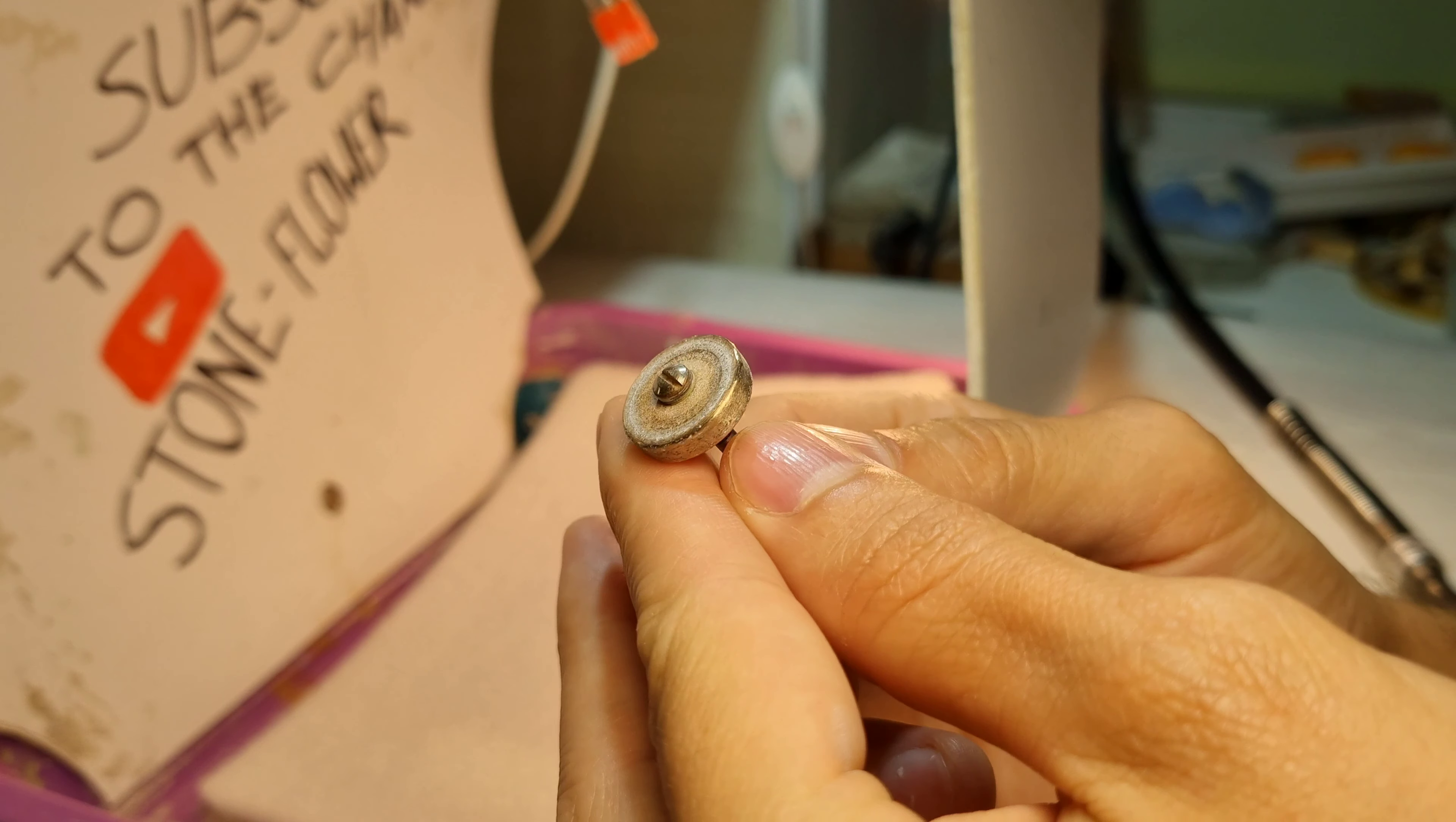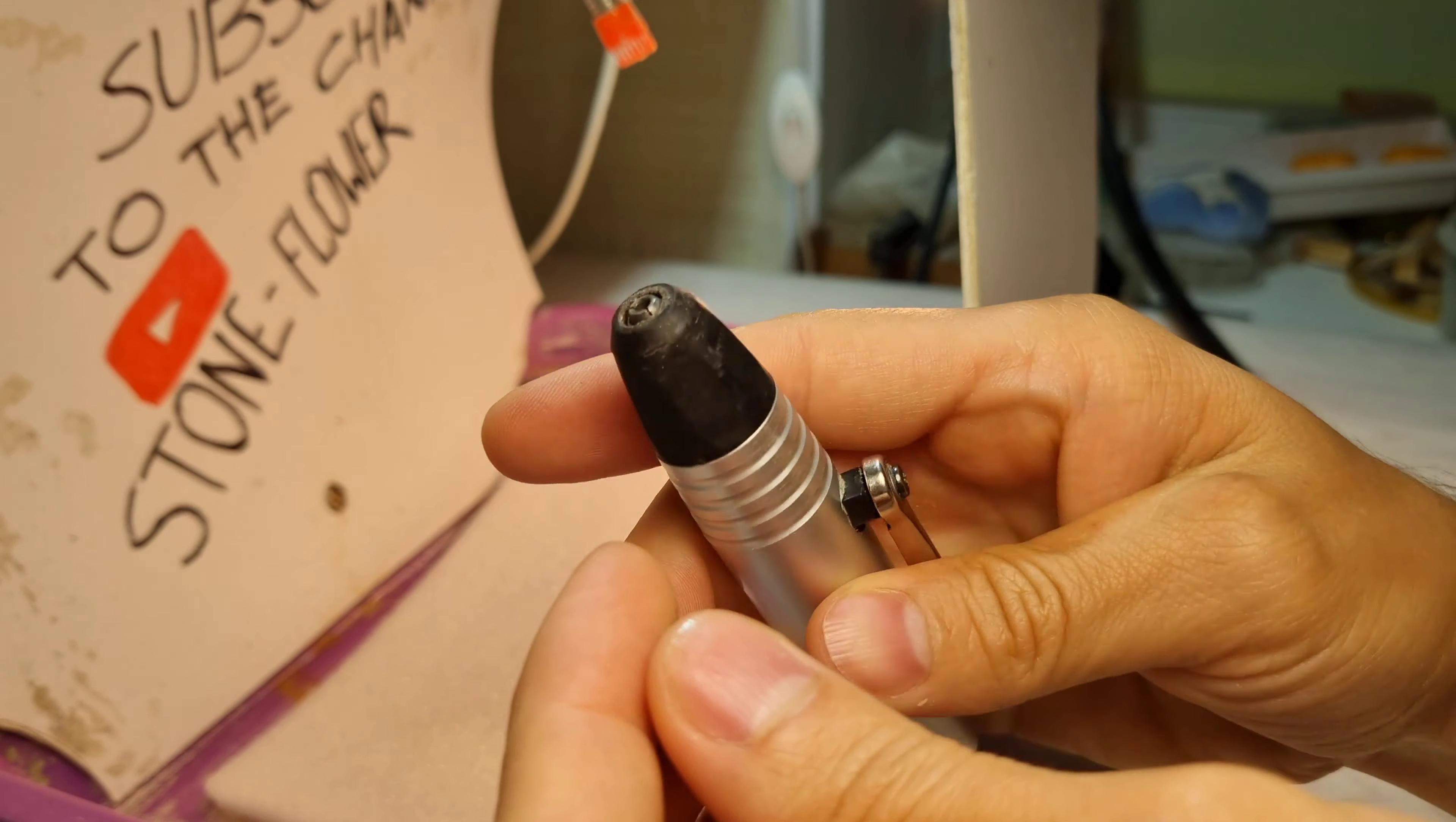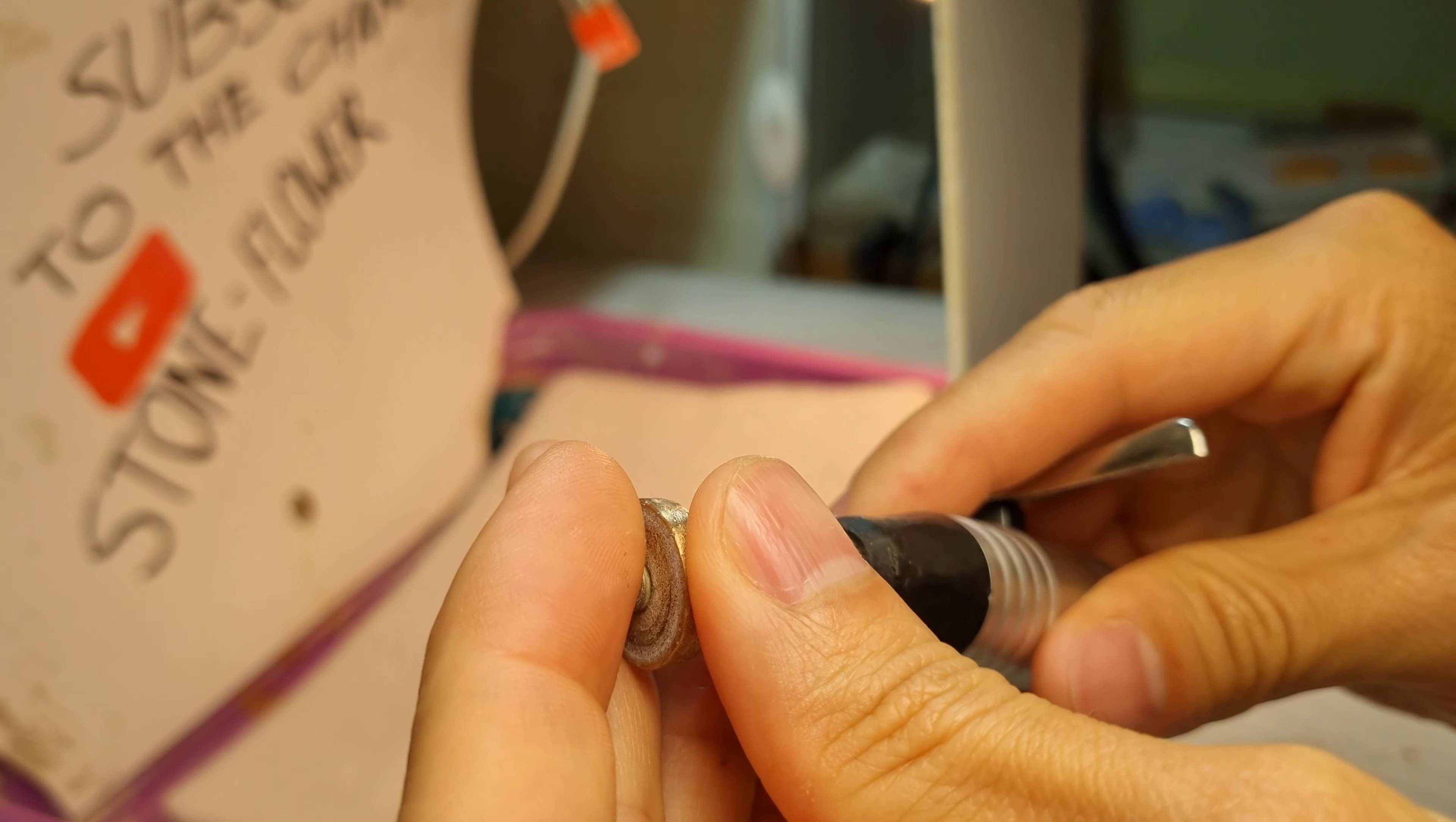In this video I will tell you how to properly install the tip. It seems nothing complicated, but there are some nuances that can affect the further processing of the stone. It is important that the abrasive wheel is strictly in the center. If it is crookedly established, blows on the stone will be felt. This will lead to cracks in the product.